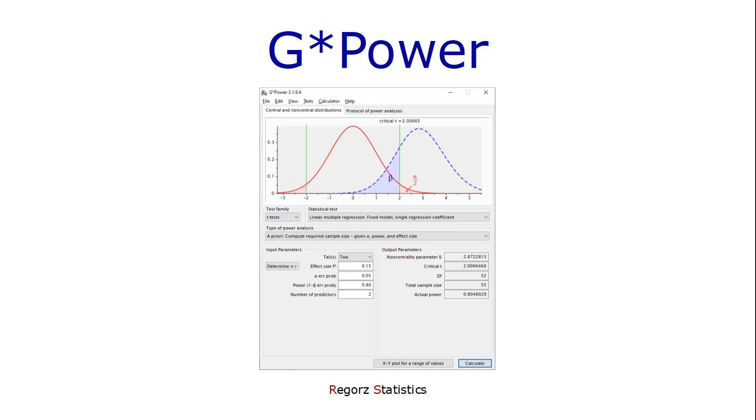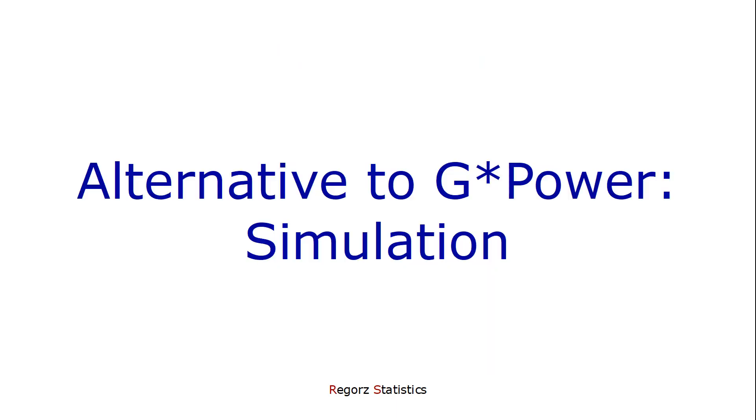One approach is using a program like G*POWER. It's a free program for power calculations. A link to their download page is in the description of this video. But unfortunately, for most approaches to test for mediation, G*POWER isn't a viable option. But there is an alternative, simulation analysis, and we'll come to that topic later.